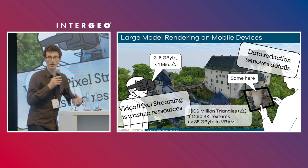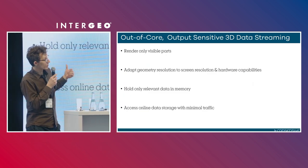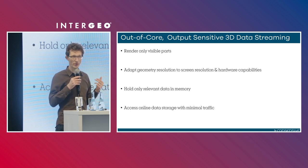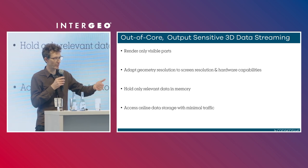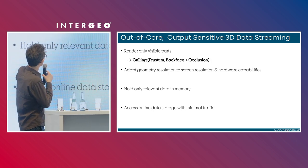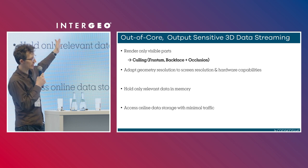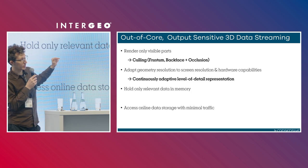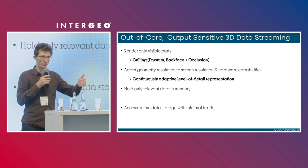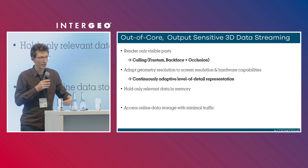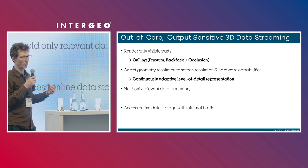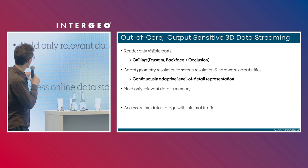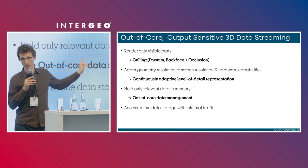The solution is output sensitivity. We never need any more data than is required to display a particular image, a particular perspective. We want to make sure that we only render visible parts — so everything that can be called frustum culling, occlusion culling, backface culling goes away. We want to make sure that we never need more triangles than we have pixels on the screen, and that we reuse the data on the fly, adapting to the display resolution, holding only the relevant data in memory.